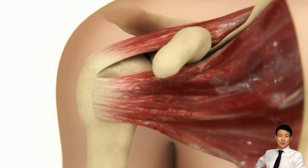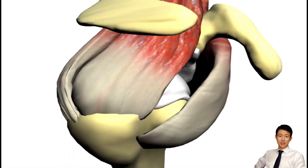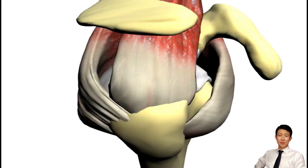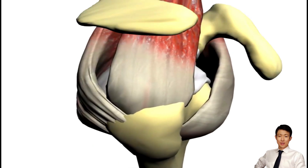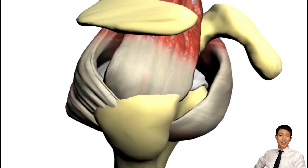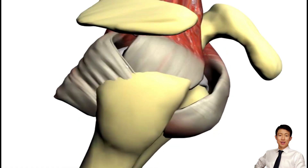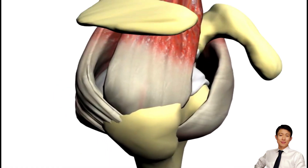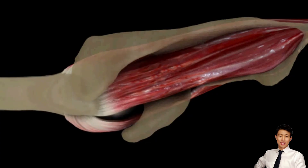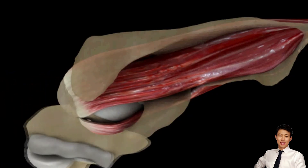The rotator cuff is a group of four muscles — the subscapularis, supraspinatus, infraspinatus, and teres minor — that form a cuff around the glenohumeral joint. Each contributes uniquely to shoulder mechanics and joint stability.